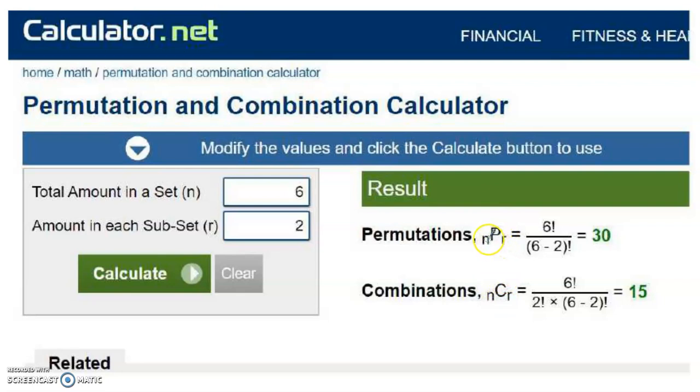And what it will spit out for you is both that specific nPr, six permutations where we're choosing two of those, which is 30, and nCr, six choose two, six combinations with two in this set that's taken. So what you'll need to decide after you calculate that is which of the numbers is the one that you need.